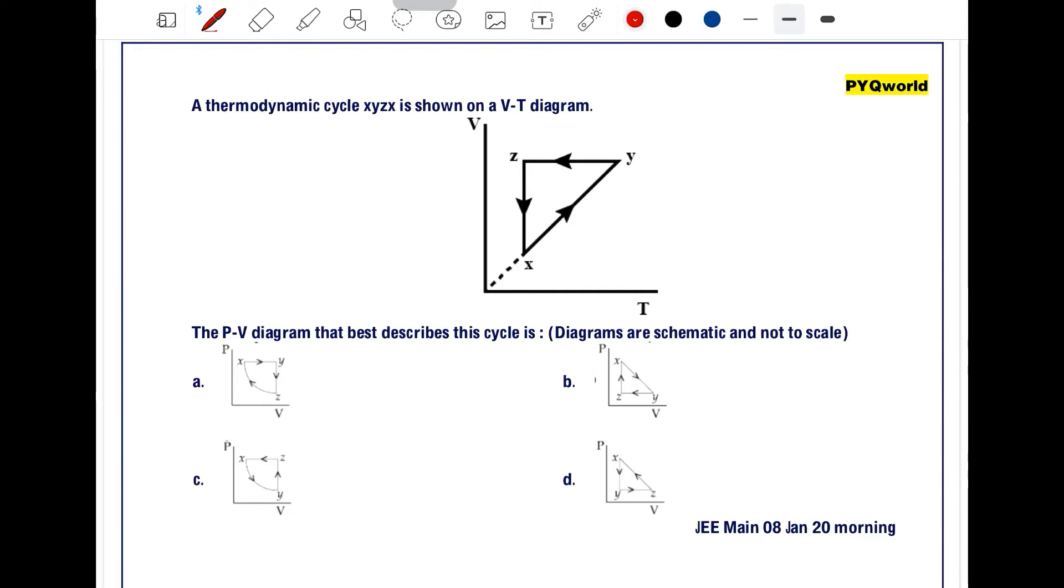A thermodynamic cycle x, y, z is shown on a V-T diagram. The P-V diagram that best describes this cycle is - diagrams are not symmetric and not to scale.